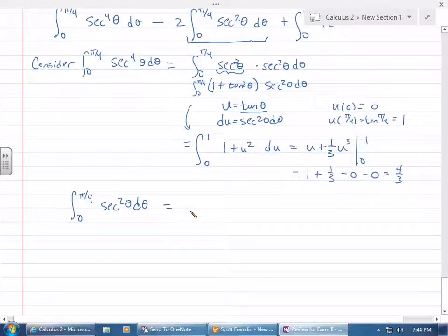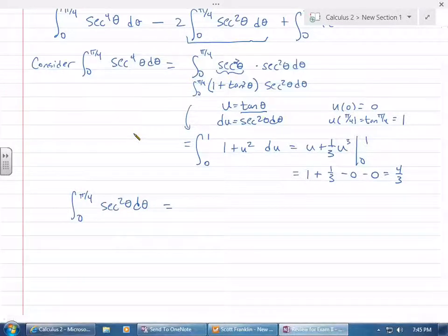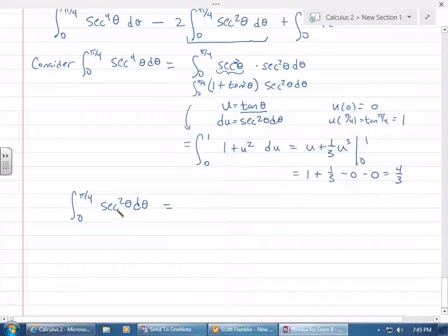What function has a derivative of secant squared? Tangent. Secant squared by itself is just tangent. You know secant squared is 1 plus tangent squared, but I want to actually take the interval. You're right that it's 1 plus tangent squared, but we don't need to go there because we know what function has a derivative of secant squared.